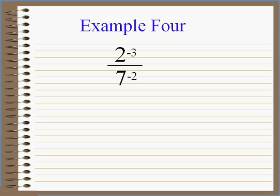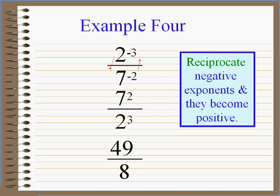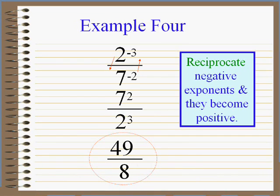Don't get nervous. Just remember what the negative exponent means: reciprocate. If it's in the top, put it in the bottom; if it's in the bottom, put it in the top. That two to the minus three will go downstairs, and that seven to the minus two will go upstairs, giving you positive exponents. Seven squared is forty-nine and two cubed is eight. That's all you have to do — reciprocate.